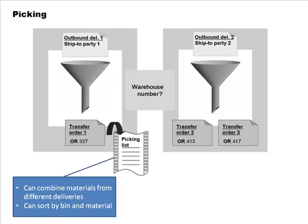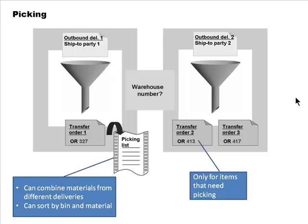The pick list is the actual list based on which picking will occur inside the warehouse. When you create the pick list, you want to make it easy for the people doing the picking. You can combine materials from different deliveries into one picking list, or sort them by bin and by material to carry out that process efficiently.